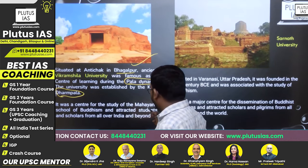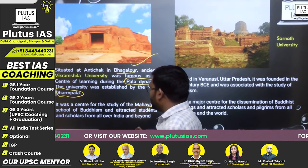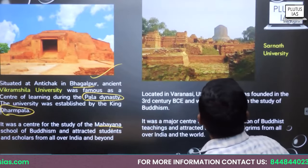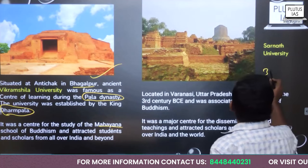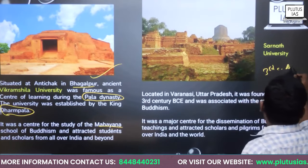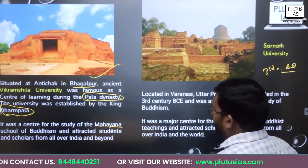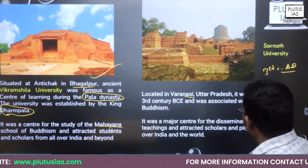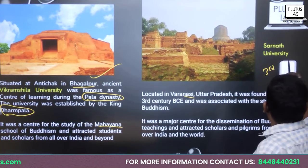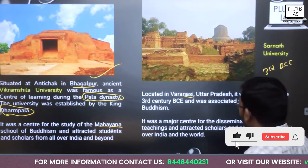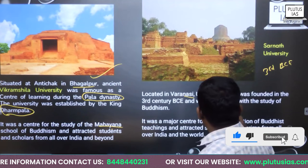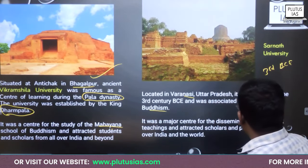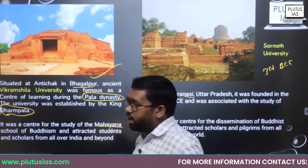Vikramshila was the center of study of the Mahayana School of Buddhism and attracted students and scholars from all over the world. Now, Taxila University was situated in the 3rd century AD and is located at Varanasi Uttarapartis. It was founded in the 3rd century BCE during the time of the Mauryas, and it was also associated with the study of Buddhism. This was a major center for the dissemination of Buddhist teachings and attracted scholars from around the world.